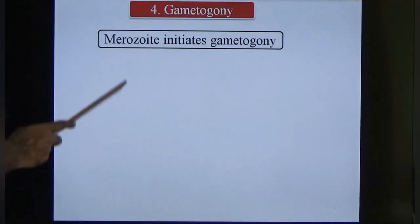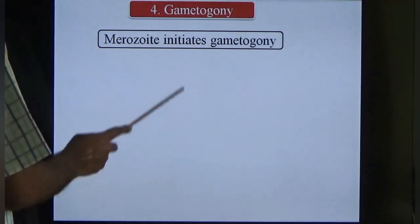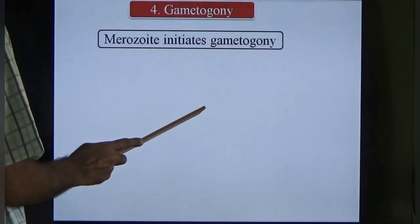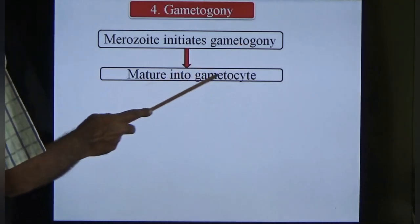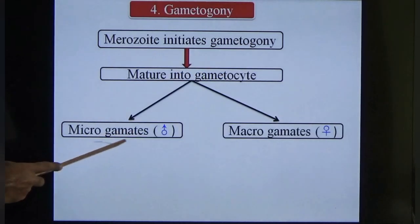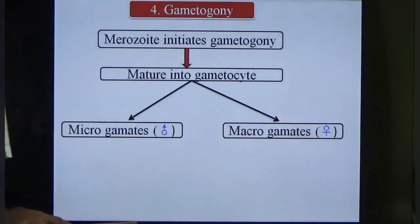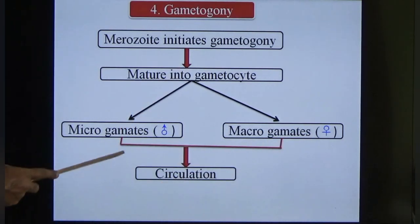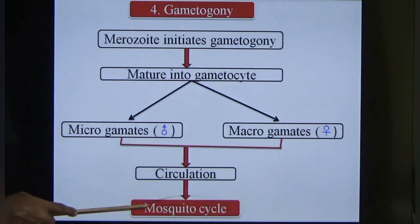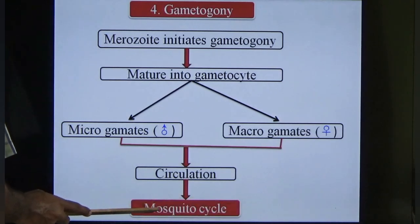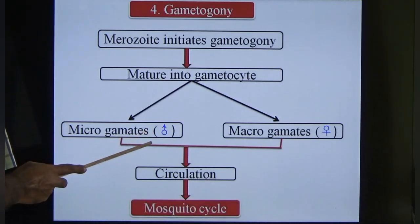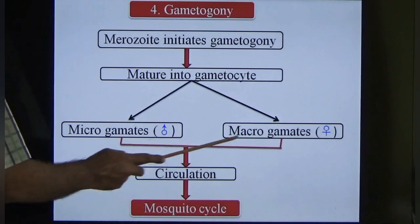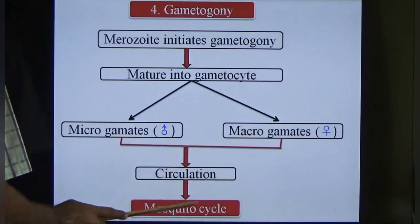In gametogony, instead of forming trophozoites, merozoites enter gametogony and form microgametocytes and macrogametocytes, which appear in circulation. When the mosquito comes and sucks blood, these gametocytes — which are the infective form of the mosquito — are taken up by the mosquito.